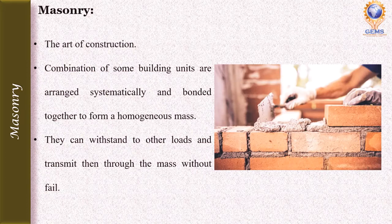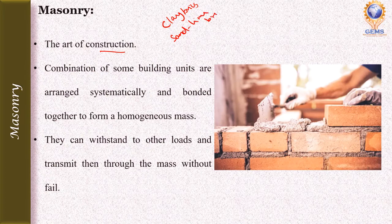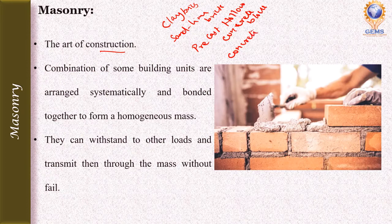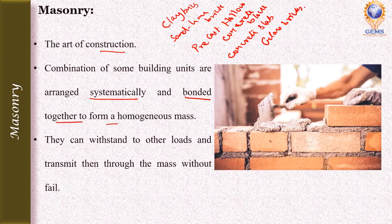Masonry is defined as the art of construction. It is a combination of some building units such as clay bricks, sand lime brick, precast hollow concrete block, concrete slab, and glass brick. Masonry is a construction of a combination of some building units that are arranged systematically and bonded together to form a homogeneous mass.